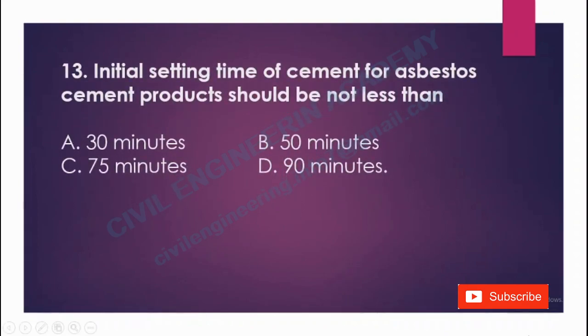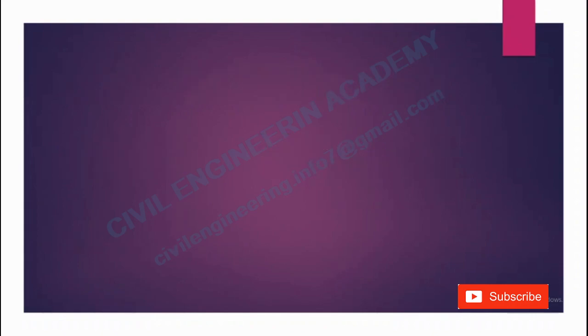Initial setting time of cement for asbestos cement products should be not less than: A) 30 minutes, B) 50 minutes, C) 75 minutes, D) 90 minutes. The answer is 90 minutes.